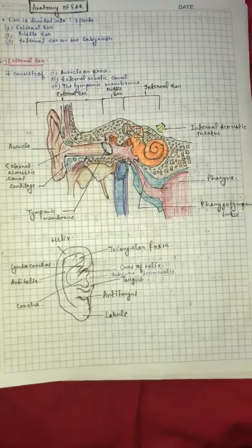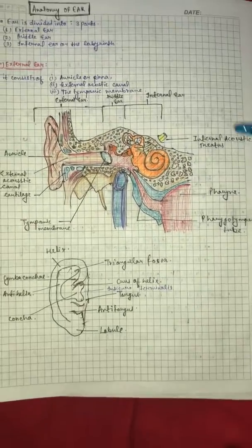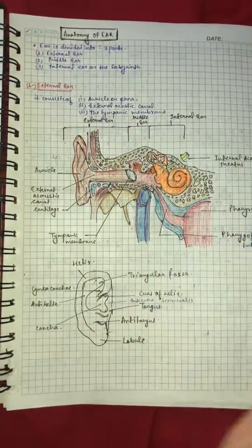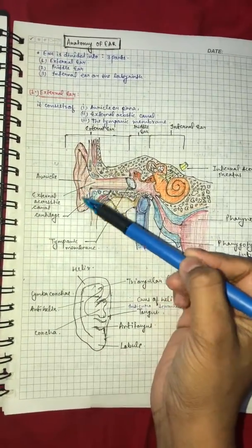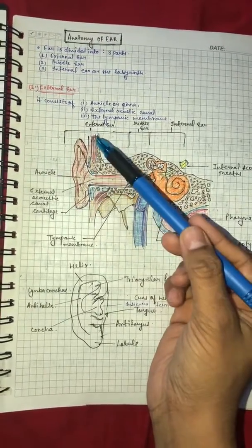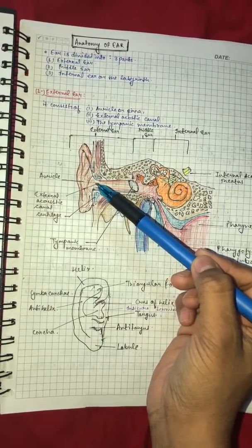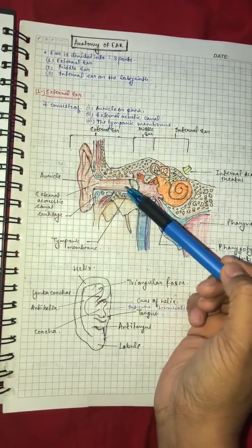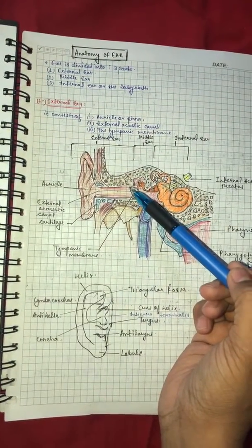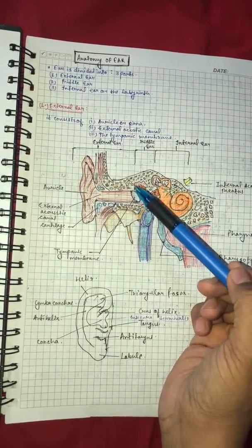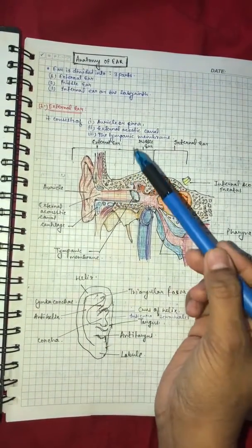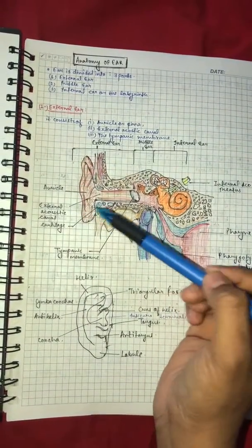Eustachian tube. First, let's see the structure of the ear: external ear, middle ear and internal ear. This is the auricle, which is the outer part. This is part of the external ear, and this tube which goes inside is the external acoustic canal which ends in the tympanic membrane. So auricle to tympanic membrane, this part is the external ear.